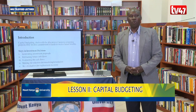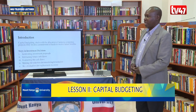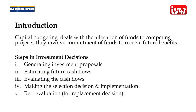In Financial Management 1 we had discussed Capital Budgeting, and in Financial Management 2 we continue to focus on key areas that have not been touched in Financial Management 1. This is therefore a continuation. Capital Budgeting deals with the allocation of funds to competing projects that involve the commitment of funds expected to generate benefits to an organization.